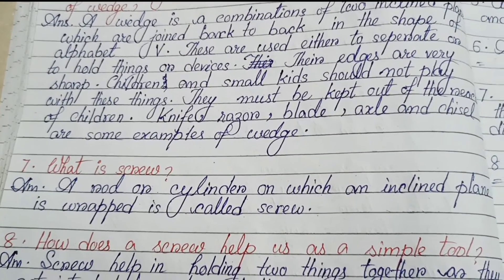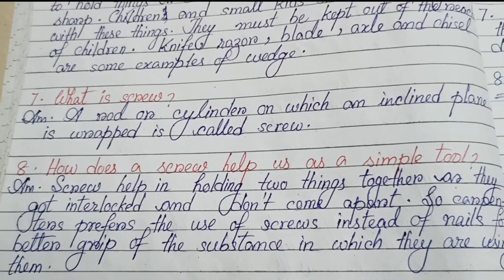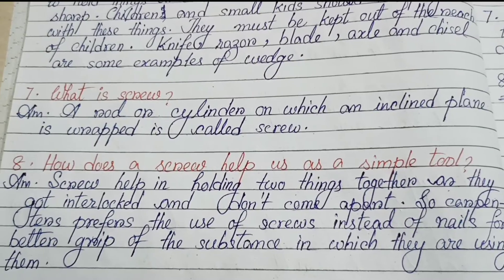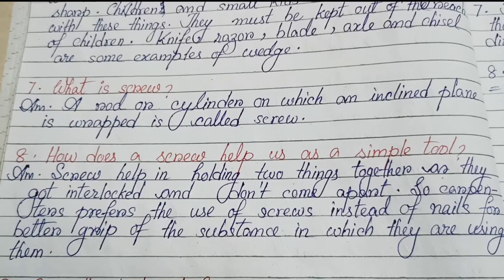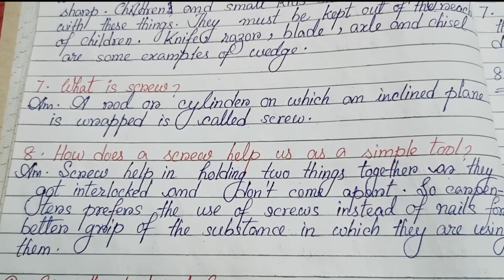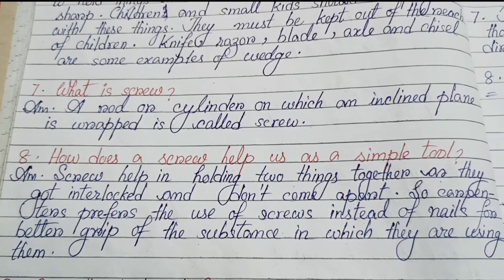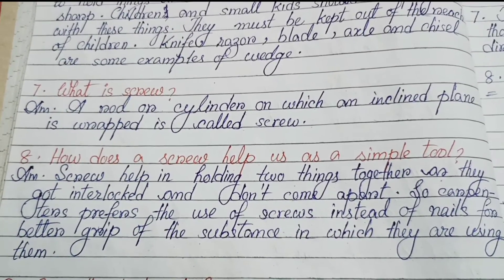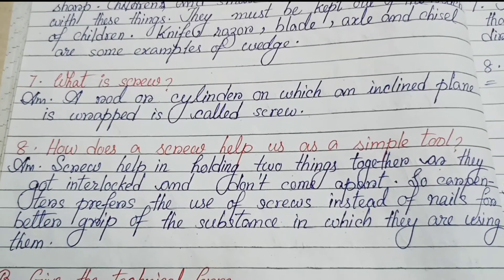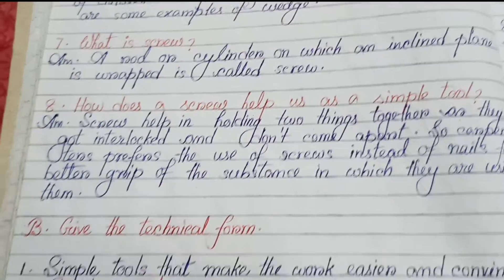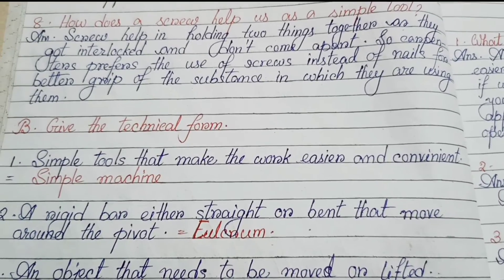Question seven: What is a screw? A rod or cylinder on which an inclined plane is wrapped is called a screw. Question eight: How does a screw help us as a simple tool? Screws help in holding two things together as they get interlocked and don't come apart. So carpenters prefer the use of screws instead of nails for better grip of the substances in which they are using them.